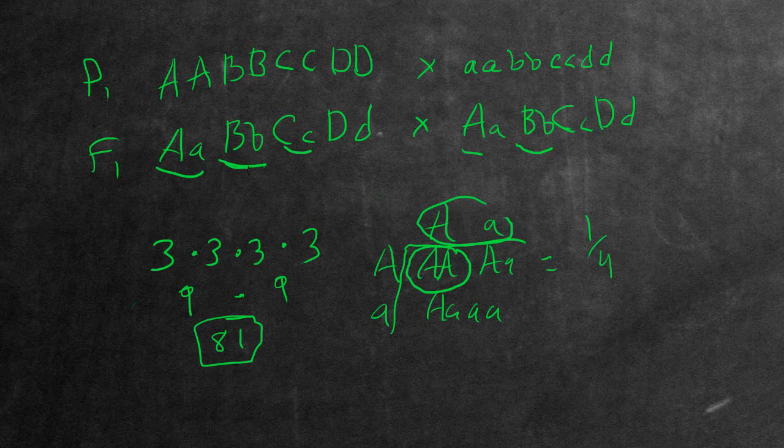because we're doing this four times total with the B and the C and the D, we're going to be doing one-fourth multiply one-fourth four times. So another way to do that is just to put this to the four, one-fourth to the power of four.